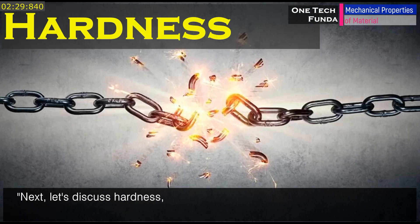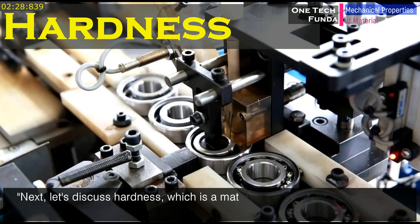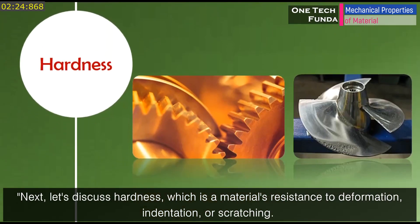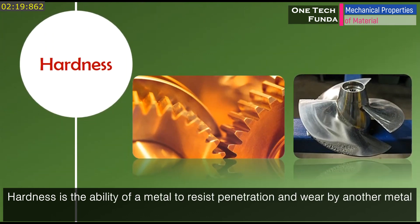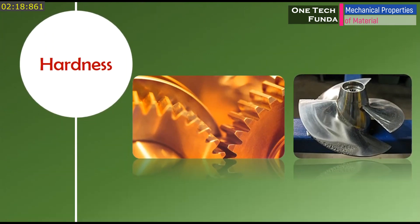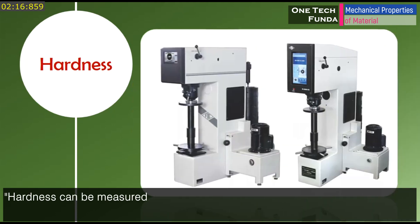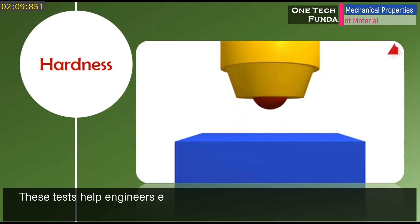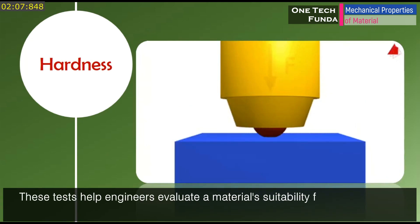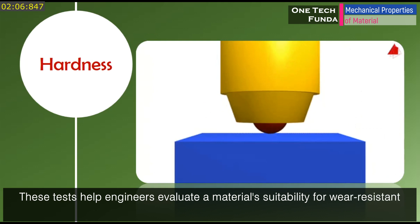Let's discuss hardness, which is a material's resistance to deformation, indentation, or scratching. Hardness is the ability of a metal to resist penetration and wear by another metal or material. It can be measured using different methods, such as the Brinell, Vickers, and Rockwell hardness tests. These tests help engineers evaluate a material's suitability for wear-resistant applications.